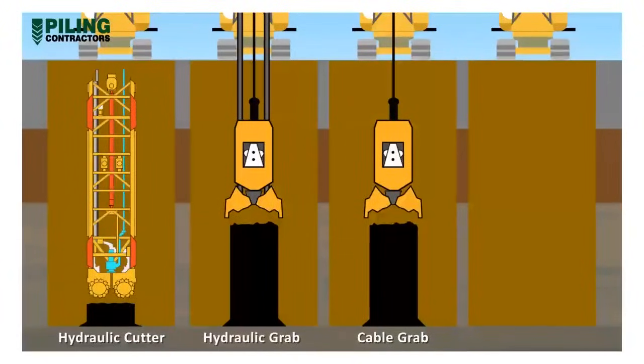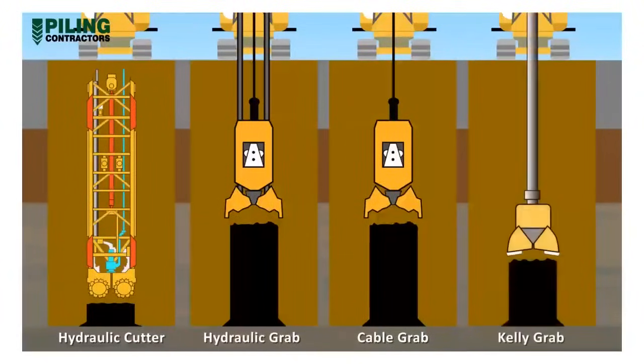And the kelly grab. This grab type is rigidly suspended from the base machine, whereas the three previous types are rope suspended. The kelly grab can provide reasonable excavation force and verticality control, but may not be as fast as suspended grab excavation.